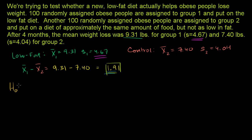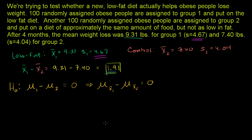Our null hypothesis should be that this low-fat diet does nothing. And if the low-fat diet does nothing, that means that the population mean on our low-fat diet minus the population mean on our control should be equal to 0. This is equivalent to saying that the mean of the sampling distribution of our low-fat diet minus the mean of the sampling distribution of our control should be equal to 0, because the mean of your sampling distribution is the same thing as your population mean.